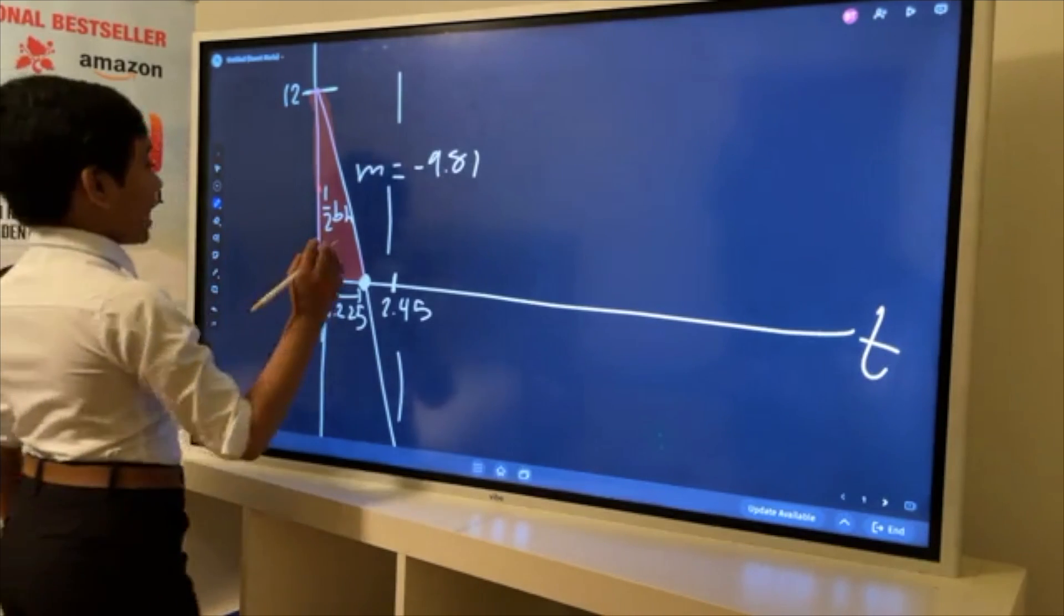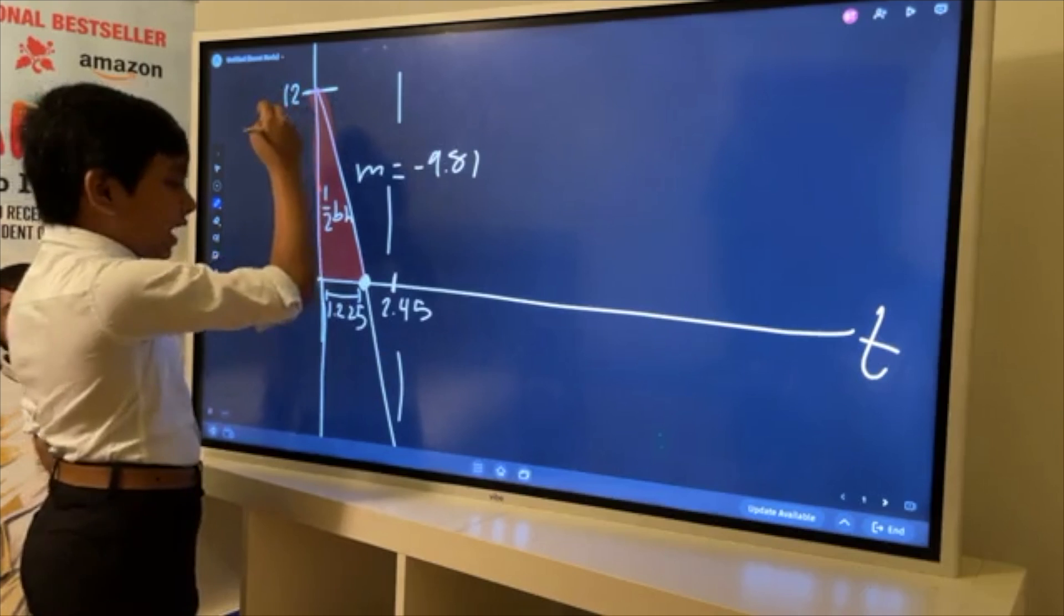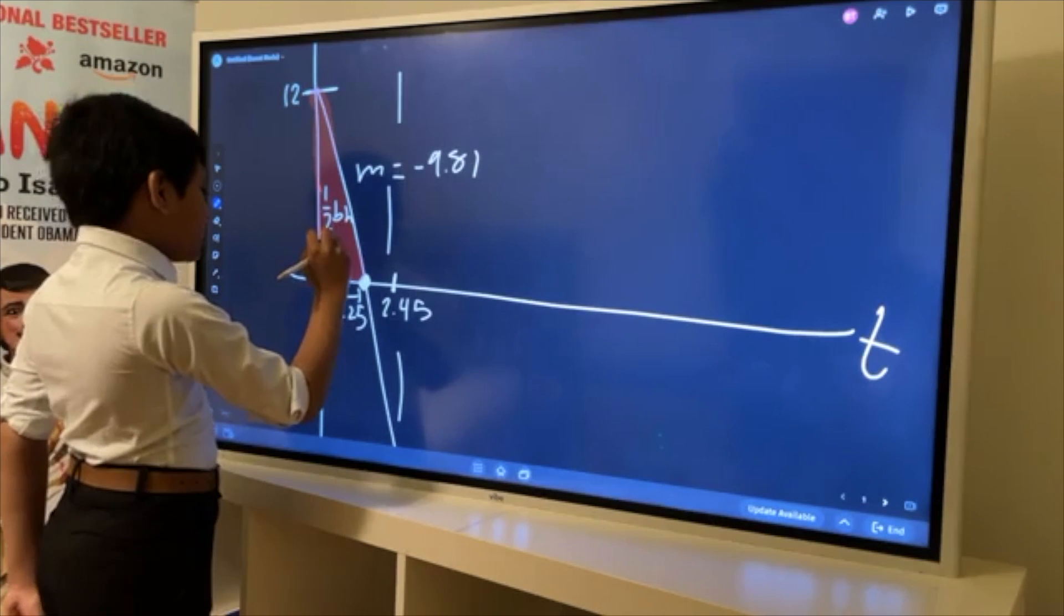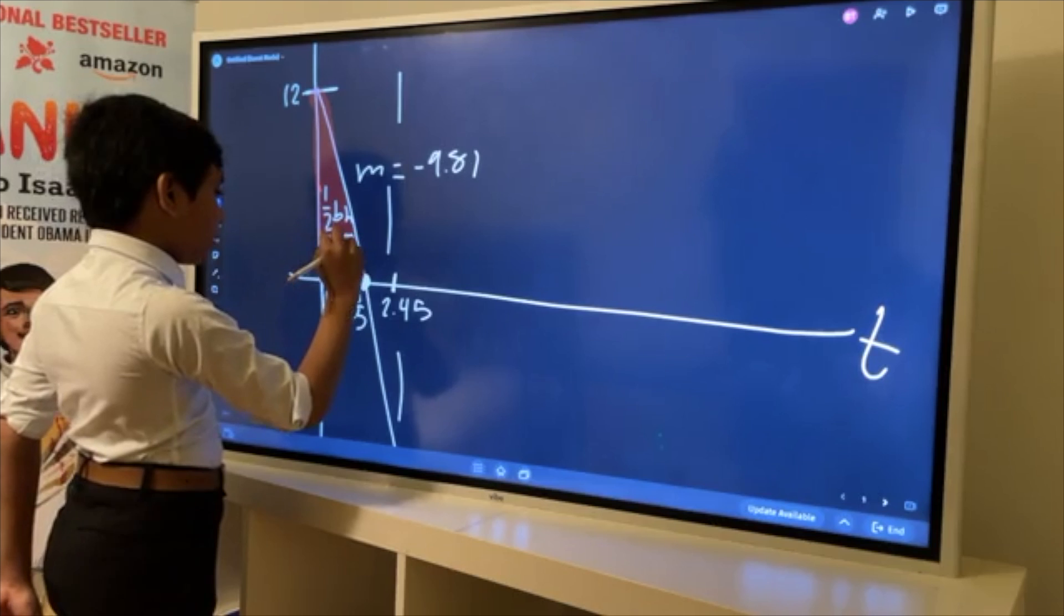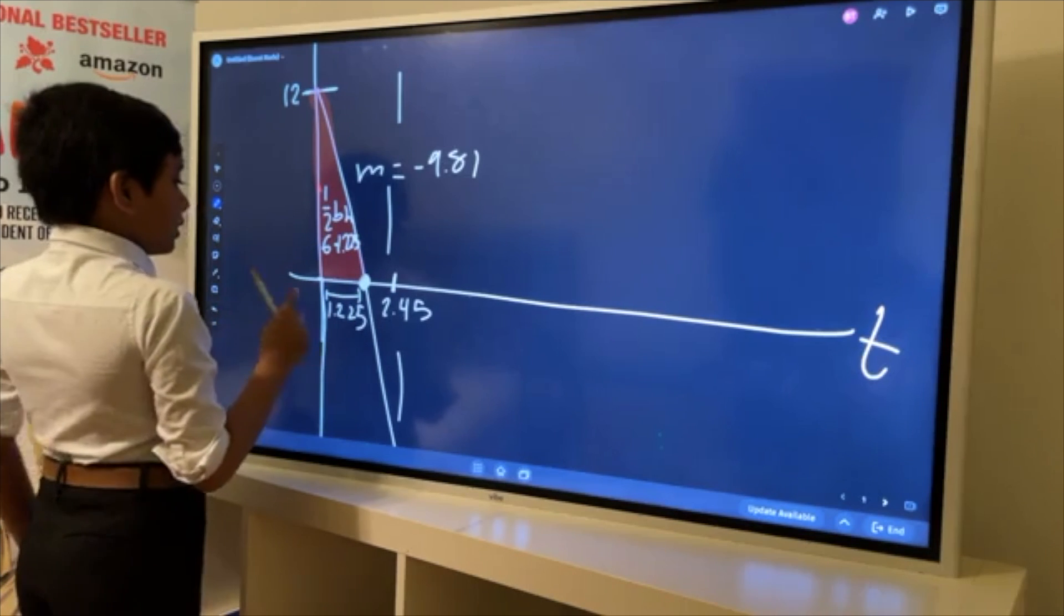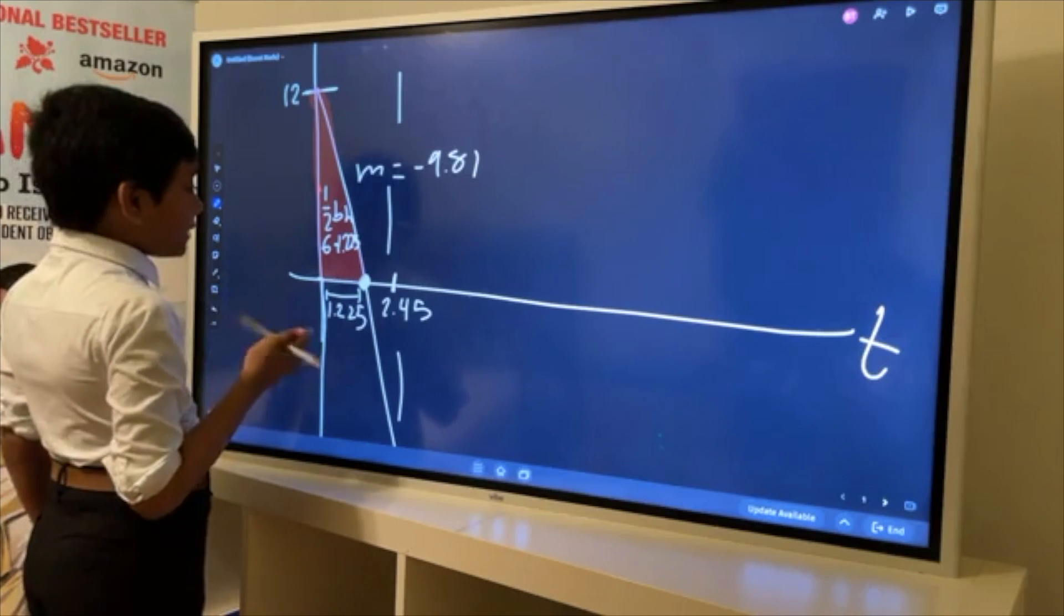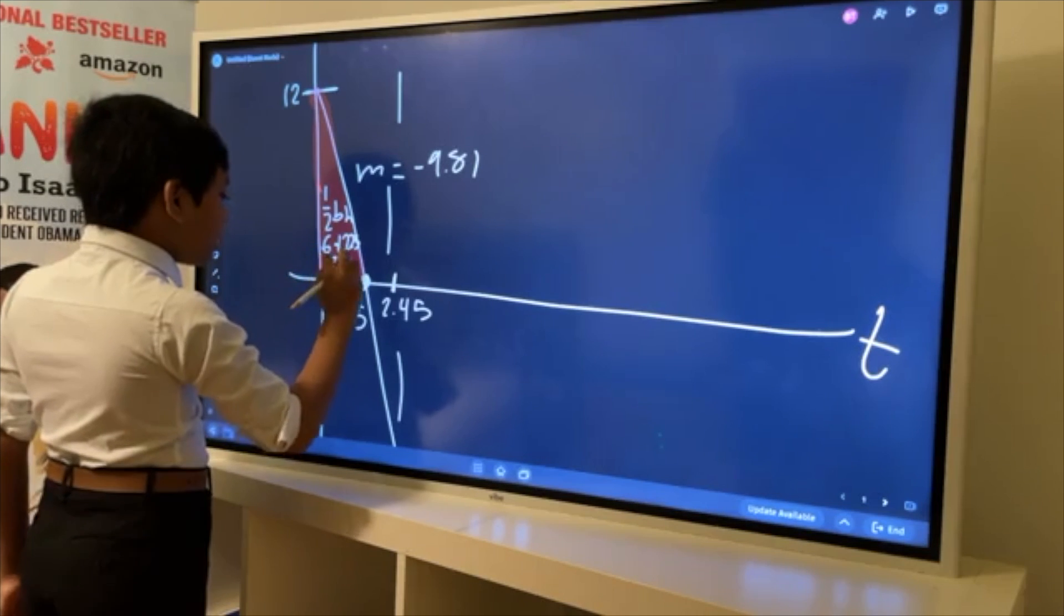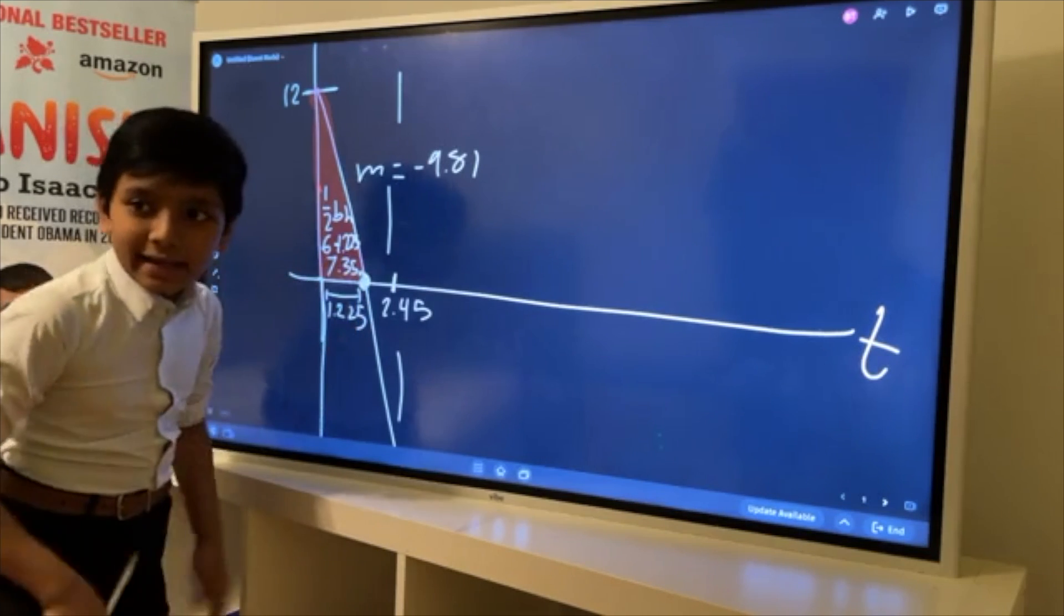That gives you 6 times 1.225, and so now that is equal to 7.35 meters.